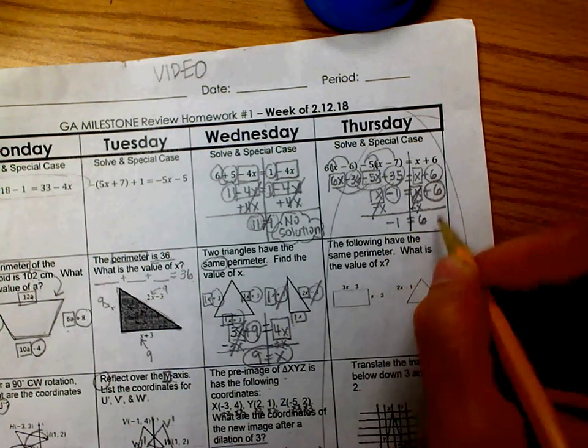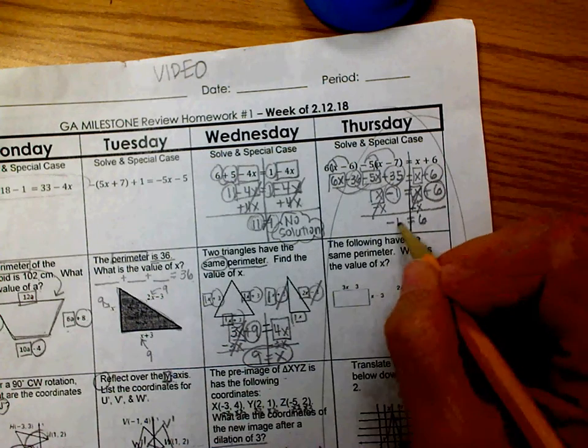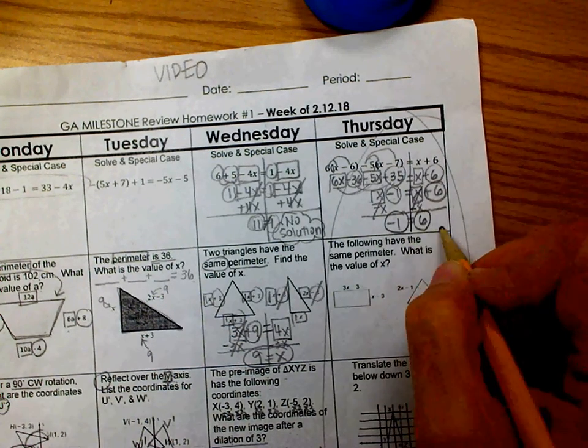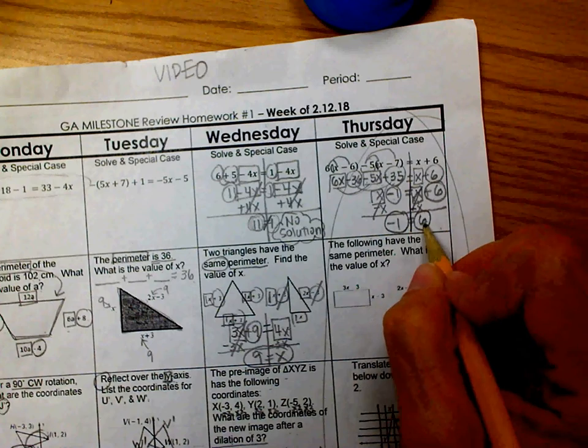Now you can't do anything else with that. I mean, you could try adding. But when you have a constant, basically go ahead and circle them and say, wait a minute. Is that true? Is negative 1 dollars equal to 6 dollars? That's false. So, this one actually has no solution.